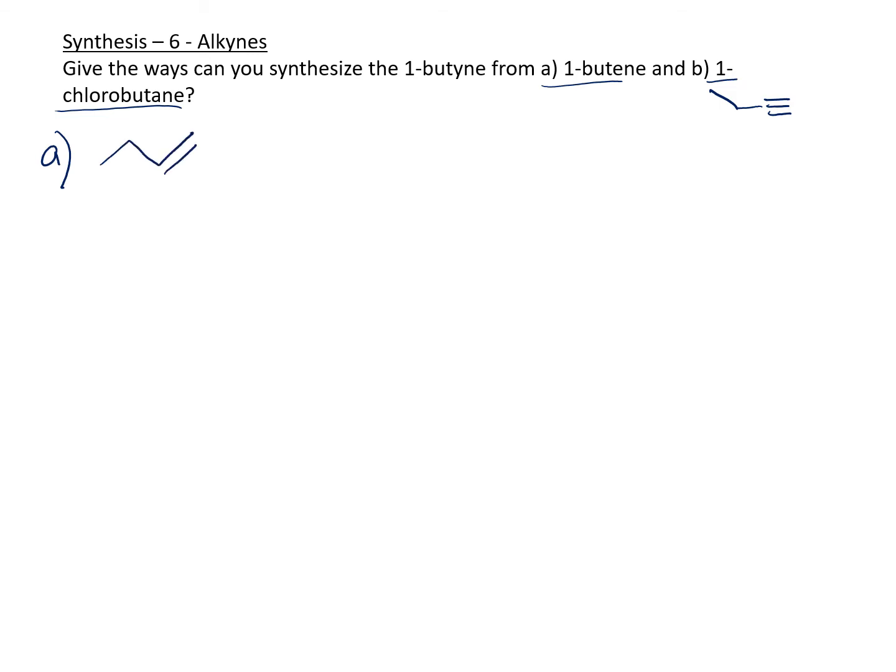We'll start with A first and then go to B. In 1-butene, this is the structure. This question doesn't ask for mechanisms, just making sure you know how to do synthesis. You can do retrosynthesis or go forward. In this case, we will go forward.